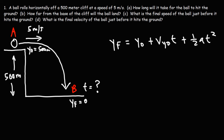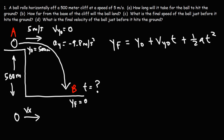Now, what about vy-initial? The ball initially is moving horizontally — it only has an x-component, it doesn't have a y-component. So for any object moving in a horizontal direction, the vertical velocity is going to be 0. That's vy-initial at point A. The vertical acceleration for any object in free fall is always going to be negative 9.8, because that object is under the influence of gravity — any object on Earth in free fall will have that vertical acceleration.